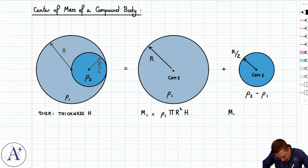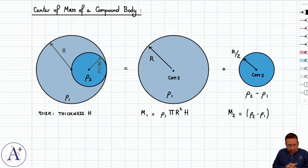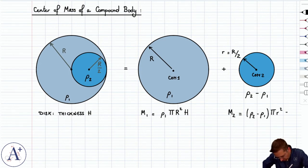Well, that's area of base pi big R squared times height big H. Here, the mass m2 is going to be equal to mass density, now that's rho two minus rho one, times the volume of the disc. Now, just to be consistent with the notes, I'm going to call this little r. At the very end, I'll substitute little r equals big R over two.